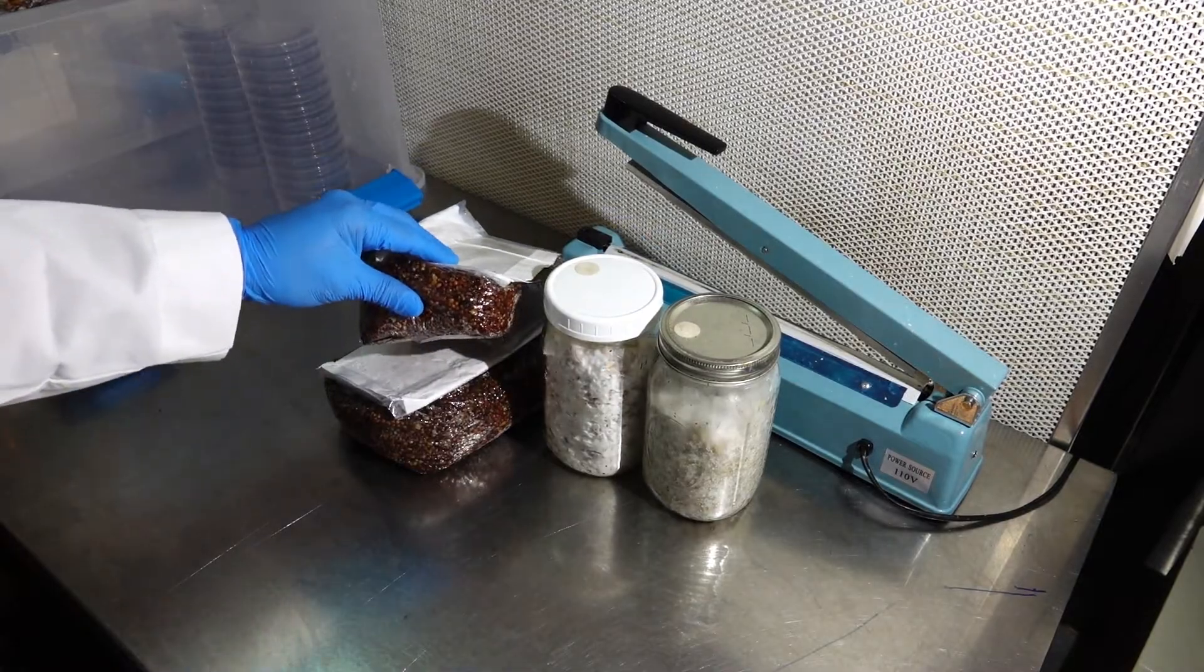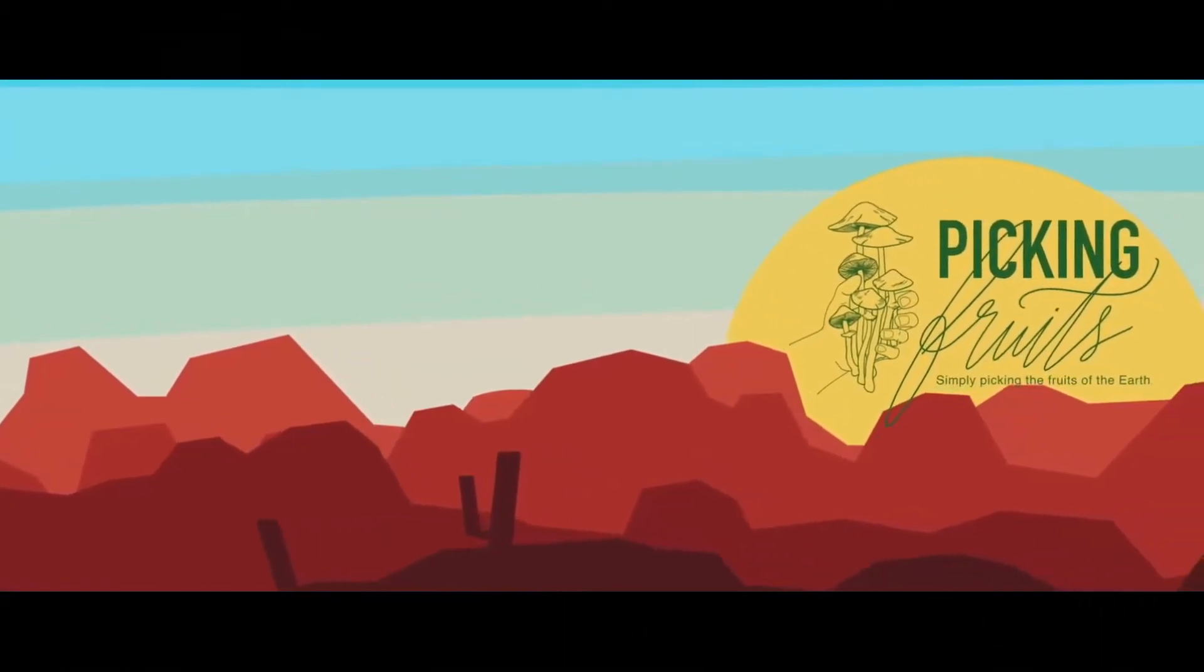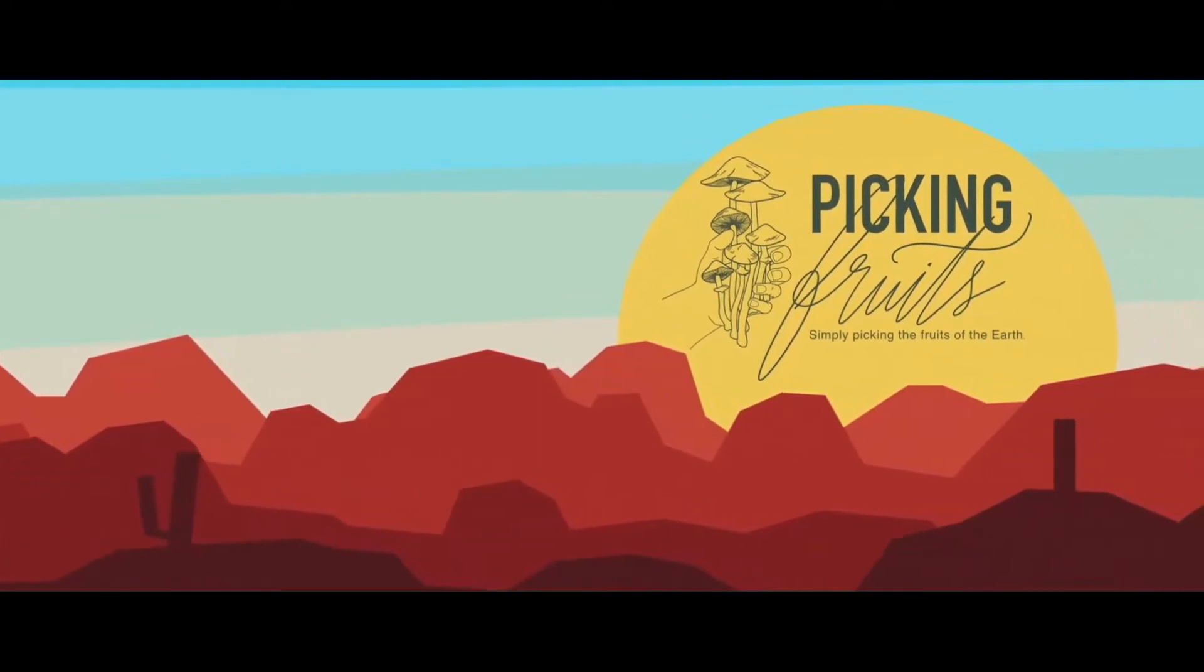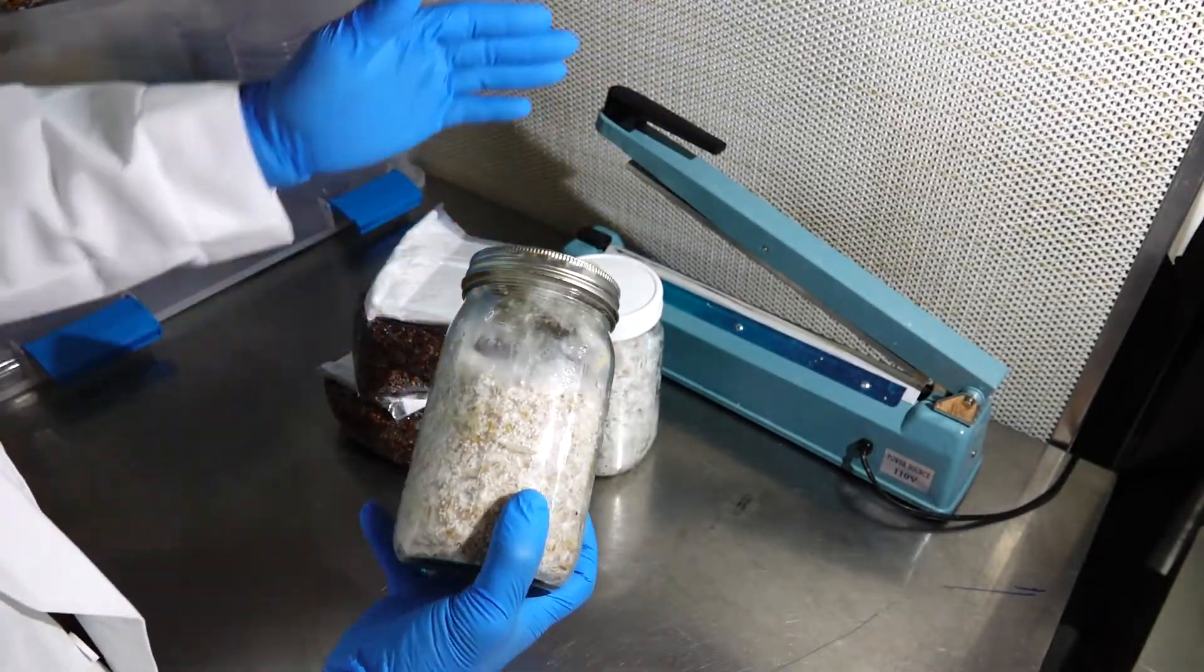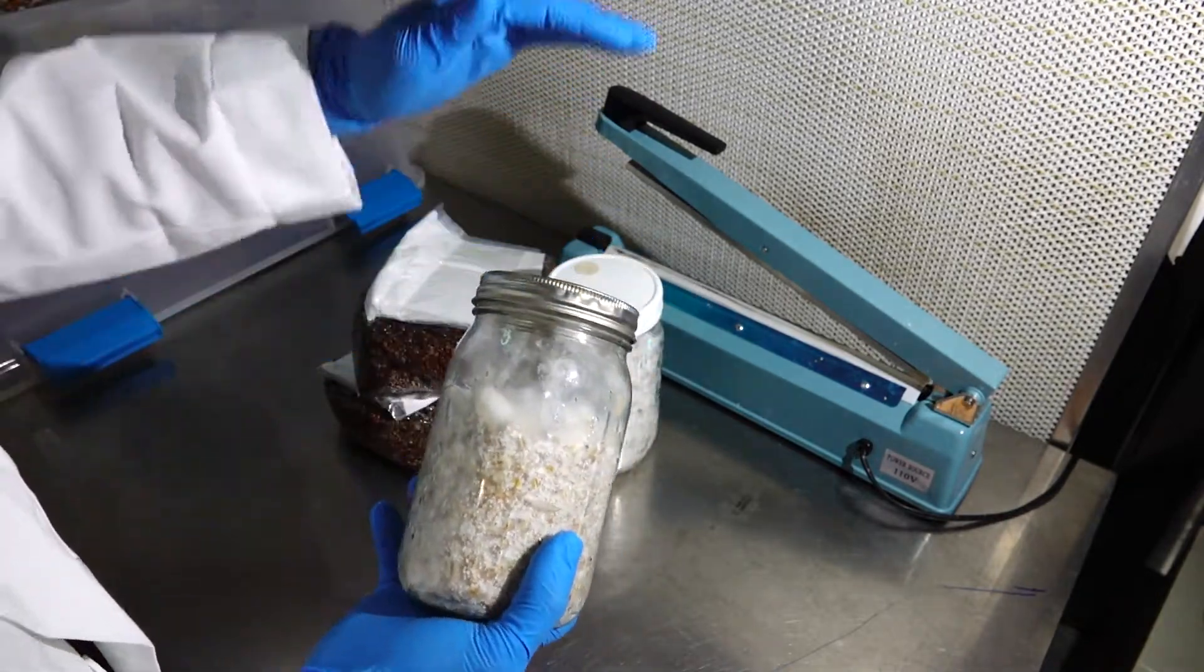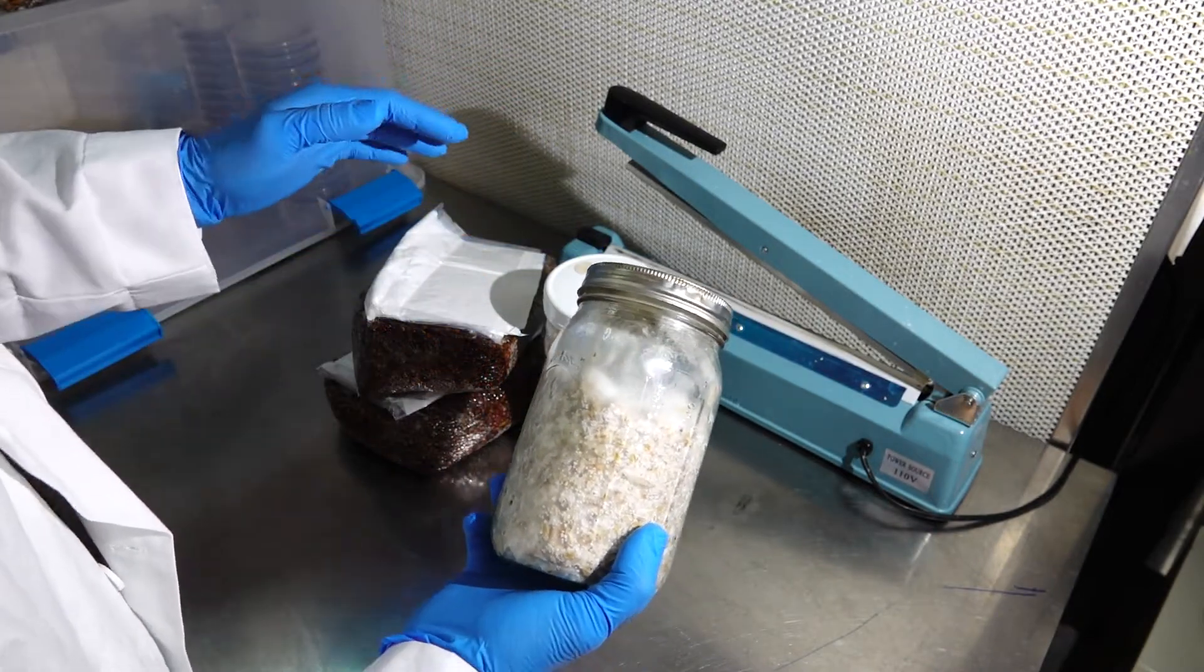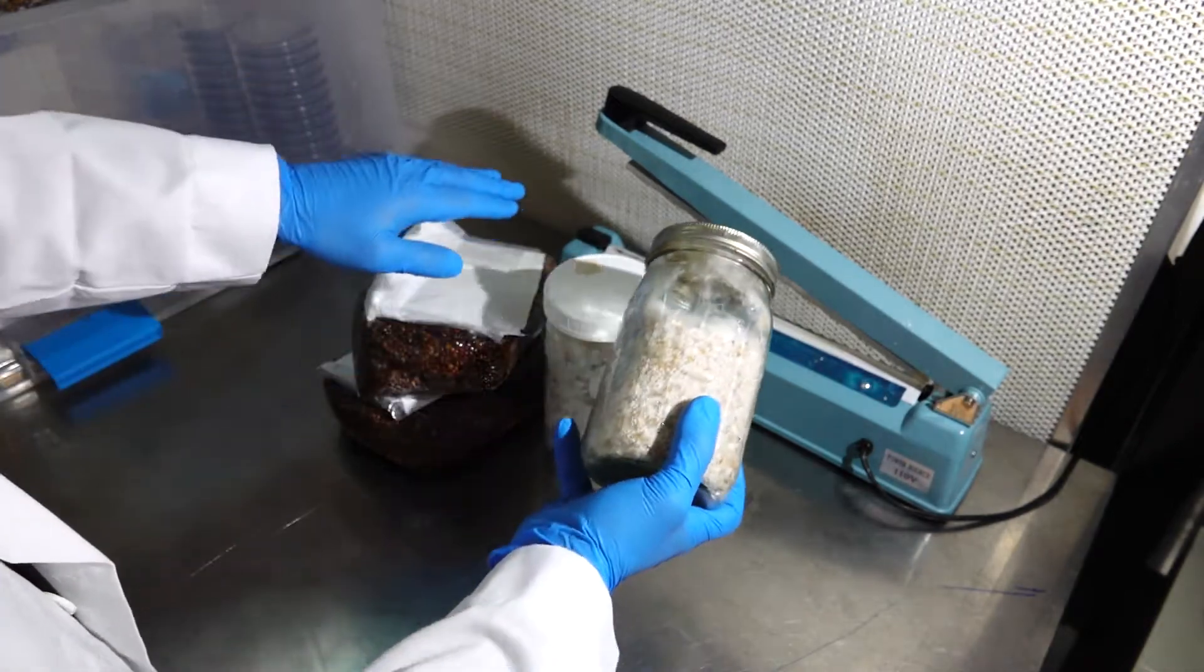If you have access to a flow hood, that is the most ideal way to prevent any contaminations. If you do not have access to a flow hood, you can easily make a SAB or still airbox at home using a plastic tub, drilling out some holes for your arms to fit into.